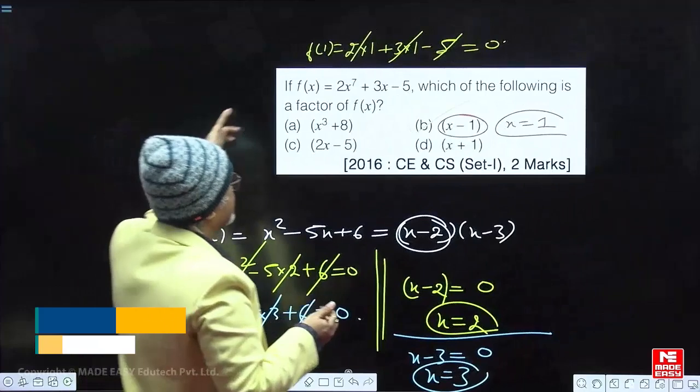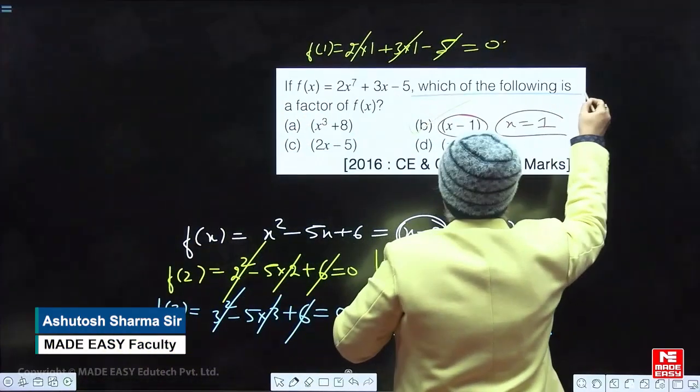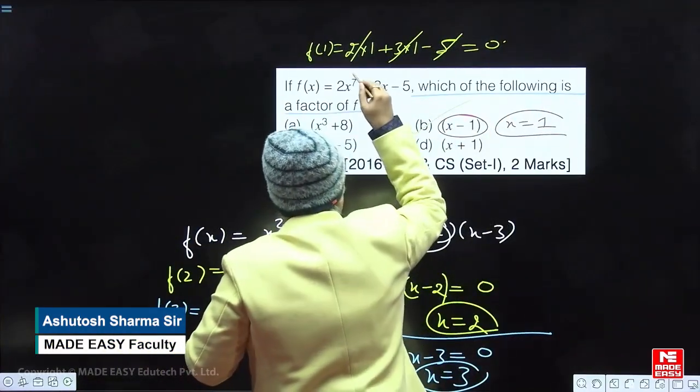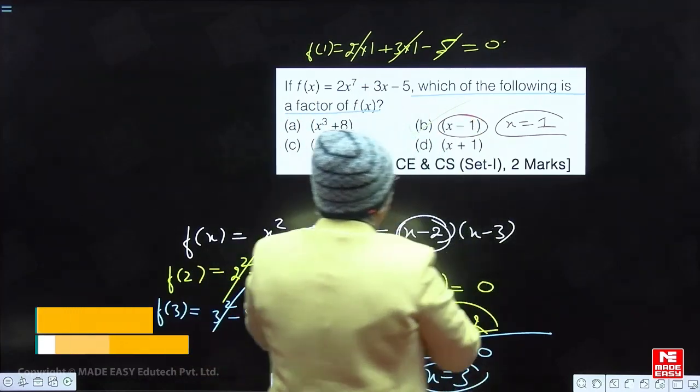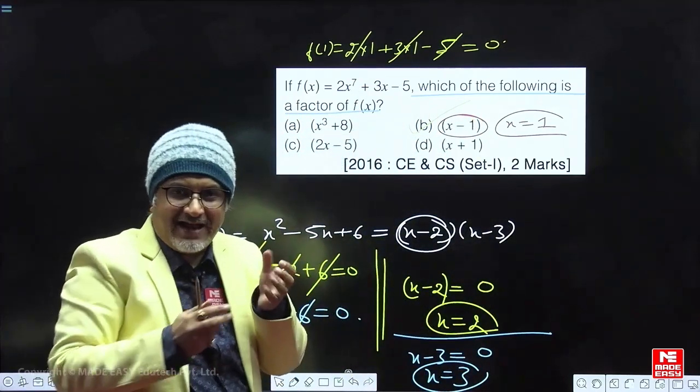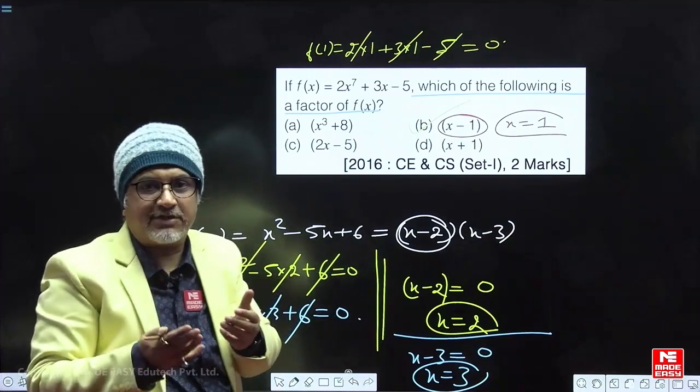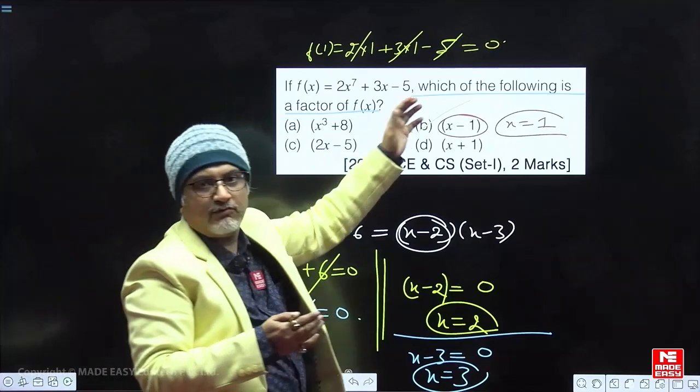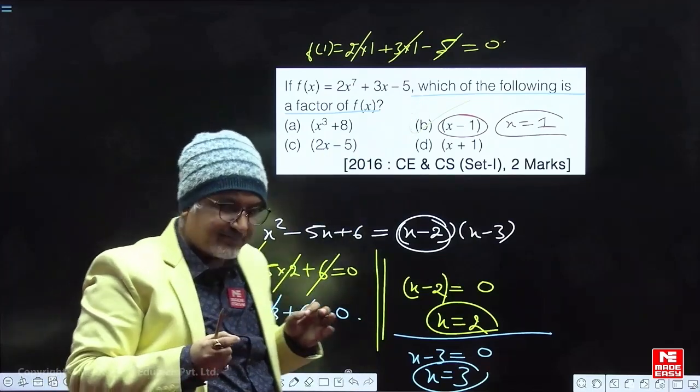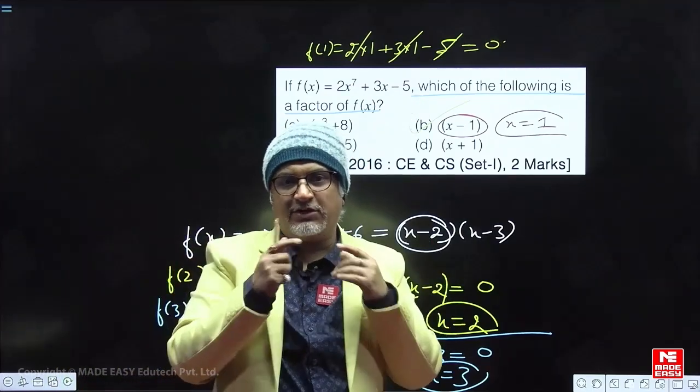the above given question says which one of the following is a factor of f(x)? If anybody among them is a factor, on putting that expression equal to 0 and getting the value of x, if we substitute this in the equation, the equation should become 0.